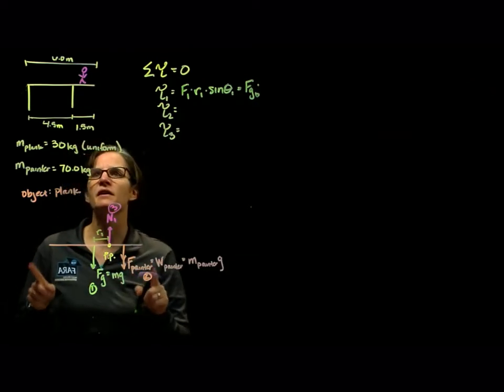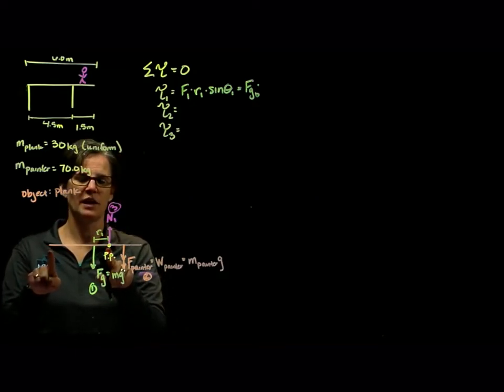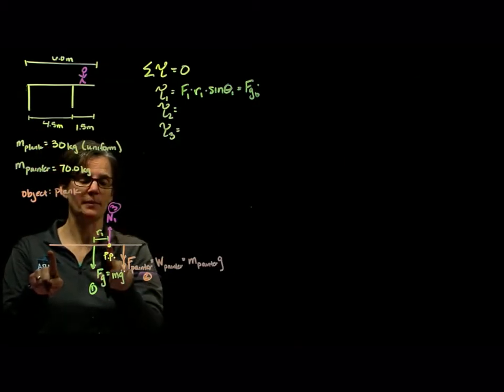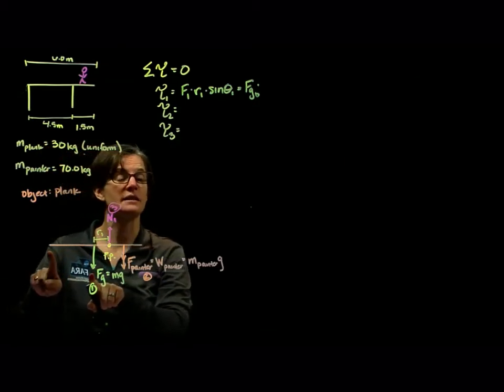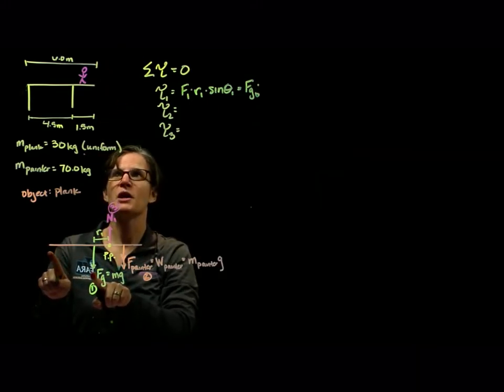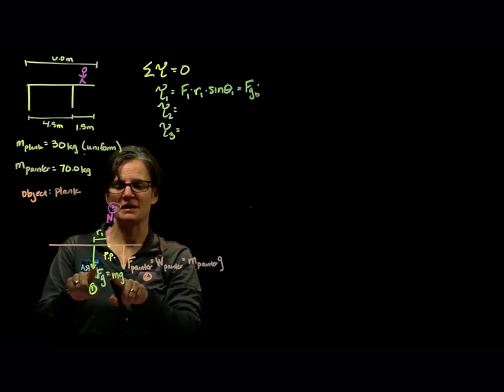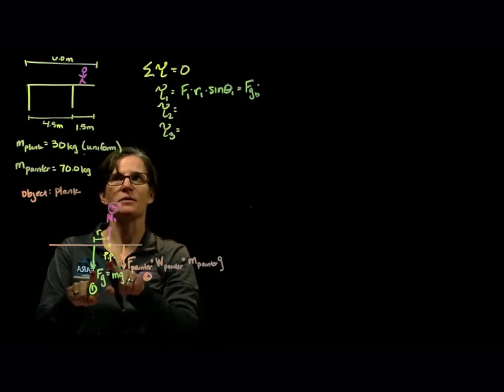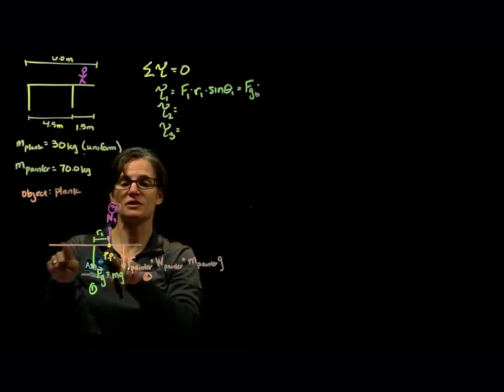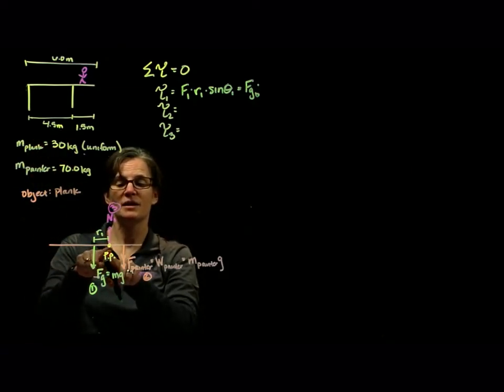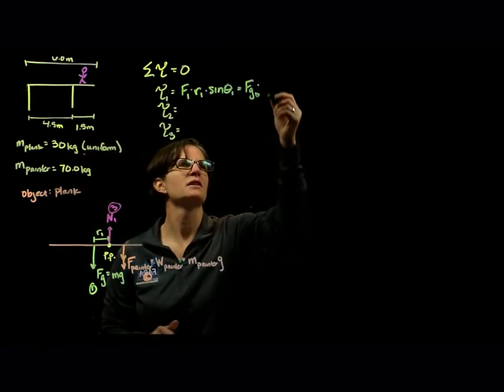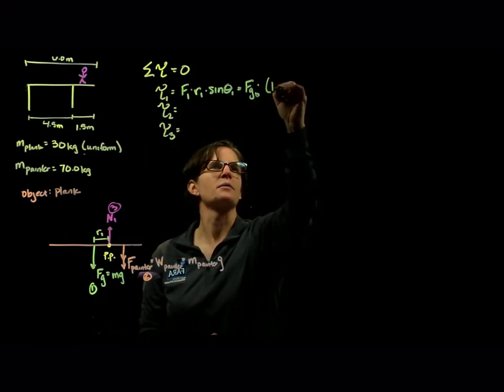If the board, we know this pivot point is located 4.5 meters from the end of the board. That's given in the problem. And we know that the force of gravity acts at the geometric center. So that's 3 meters, since the board is 3 meters long. So the distance between the force of gravity and the pivot point is 1.5 meters. So we have 4.5 meters to the pivot point, and 3 meters to here. So we have 1.5 meters of radius. So this is times 1.5 meters.